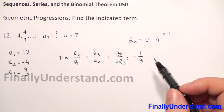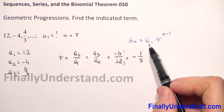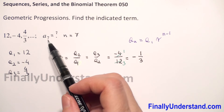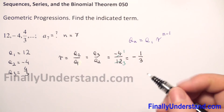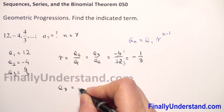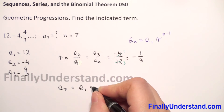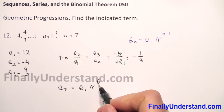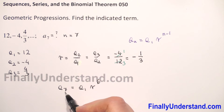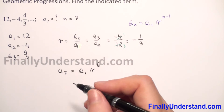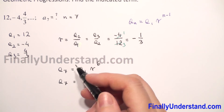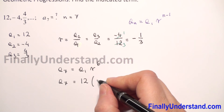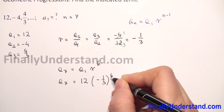Now that we have r and the first term, we can use the formula with n equal to 7 to calculate the 7th term. So a7 is equal to a1 times r to the power 7 minus 1, which is 6. The power of r is always one less than the number of the term. So a7 is equal to 12 times negative one third to the power 6.